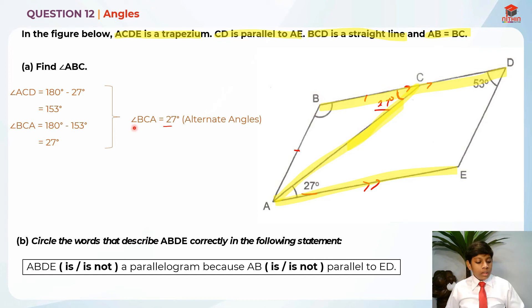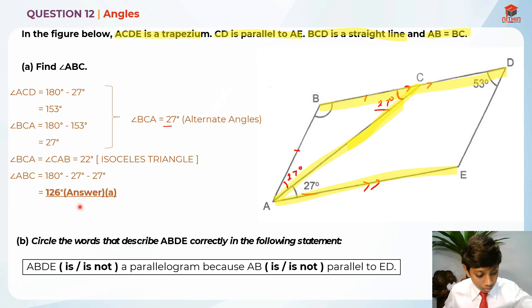Now that we know that angle BCA is 27 degrees, we know that angle CAB is also 22 degrees. It's because of the isosceles triangle property. The base angle of an isosceles triangle are same. So, let me write down here 27 degrees as well. In order to find angle ABC, I'm just going to take 180 degrees minus 27 degrees minus 27 degrees. It will give me 126 degrees. So, I hope you understand my explanation for this part A.